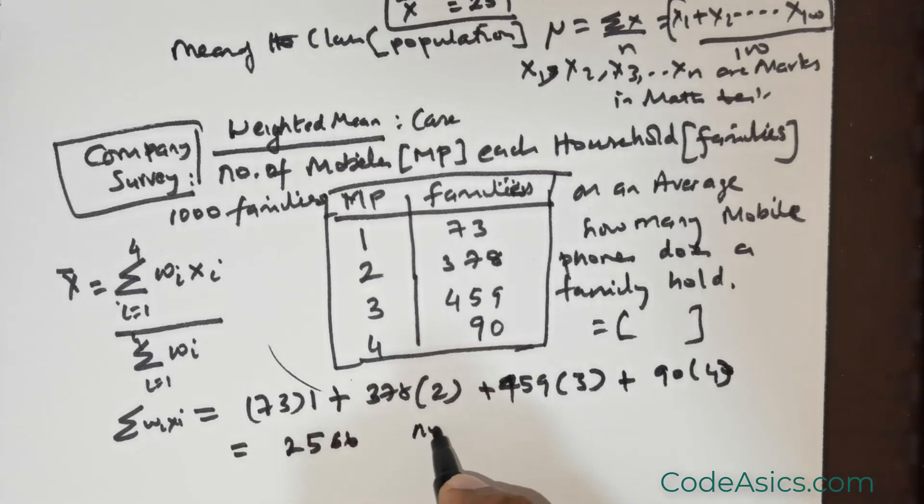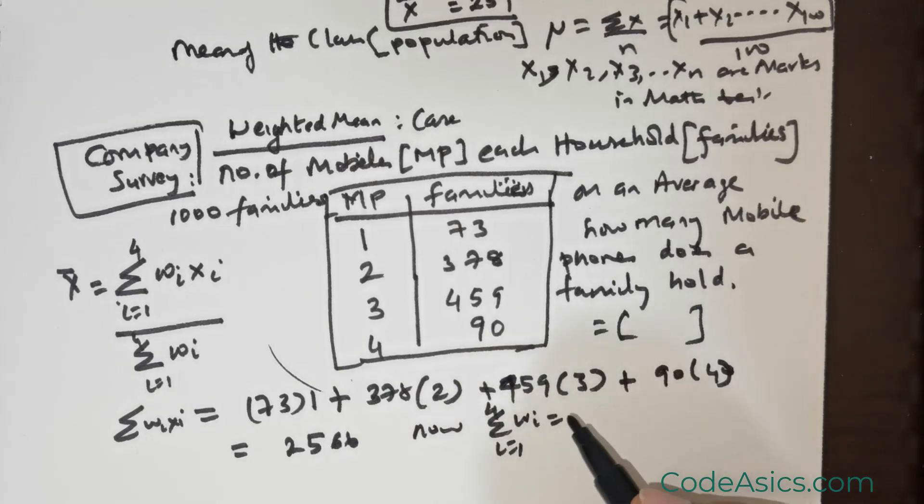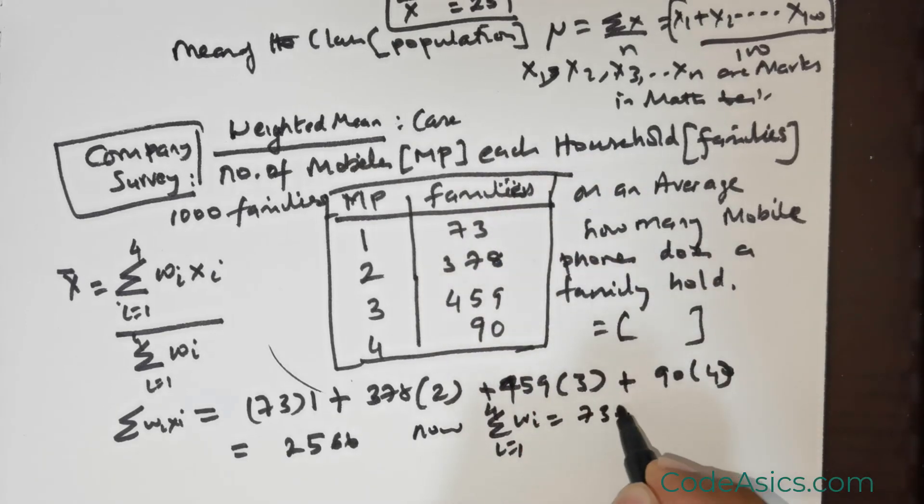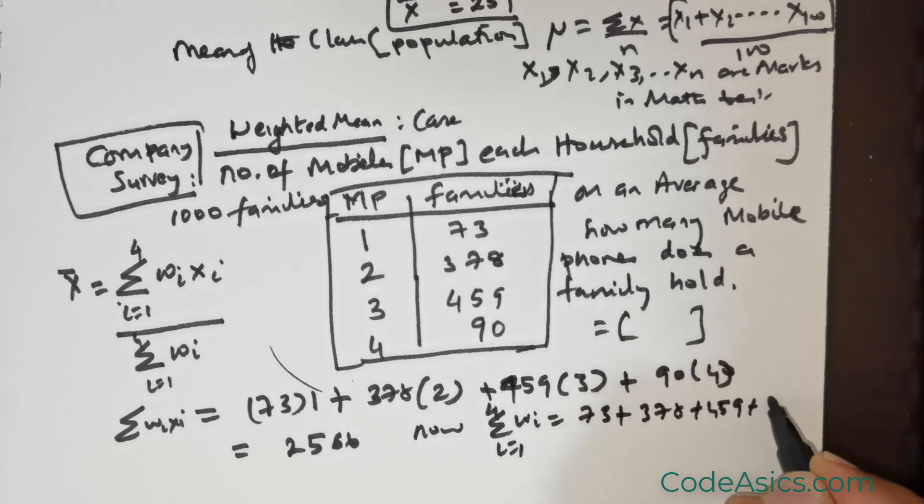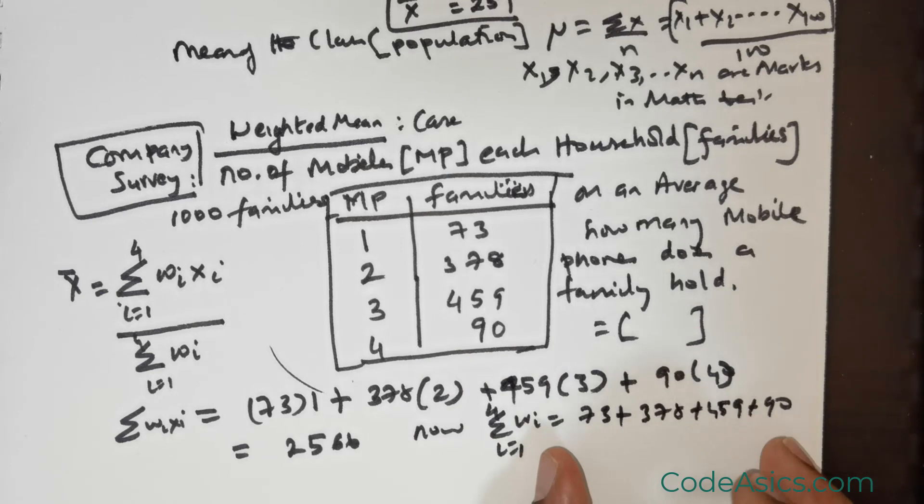Now what you have to do is find the sum of wi, where i equals 1, 2, 3, 4. As I mentioned, this is the weight: 73 plus 378 plus 459 plus 90. This is the weight that we have summed up.